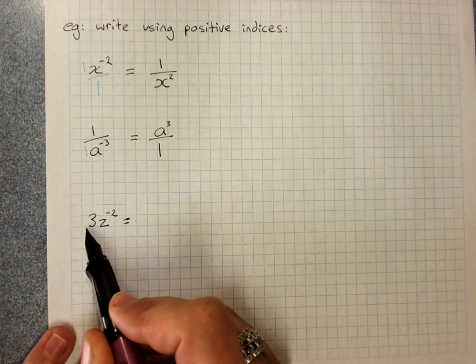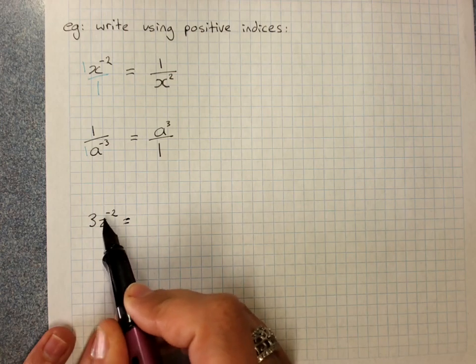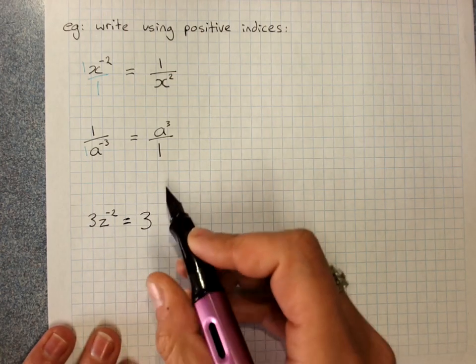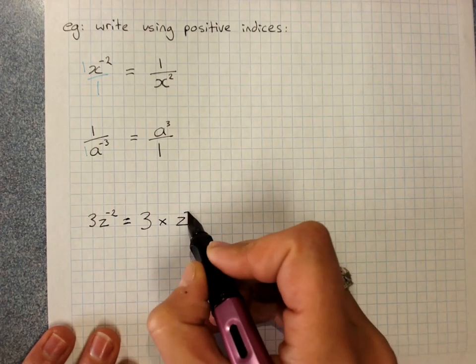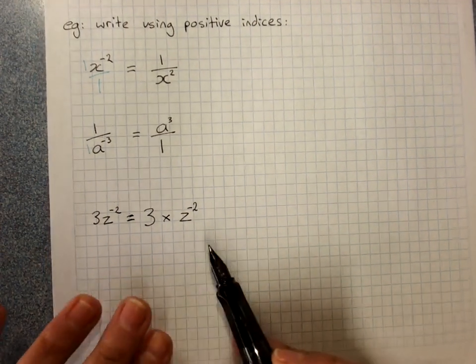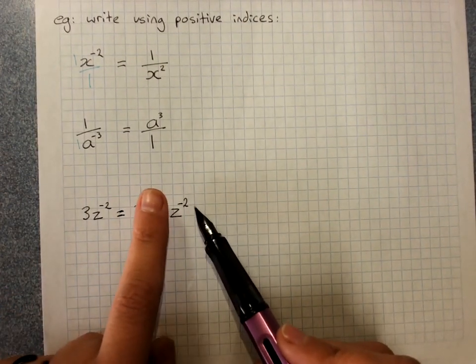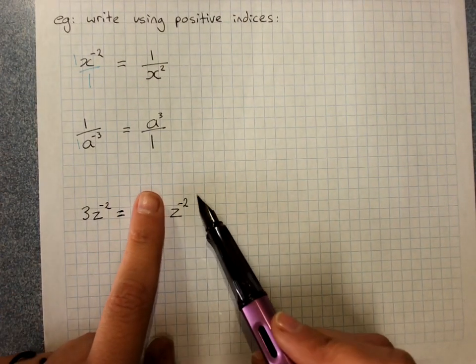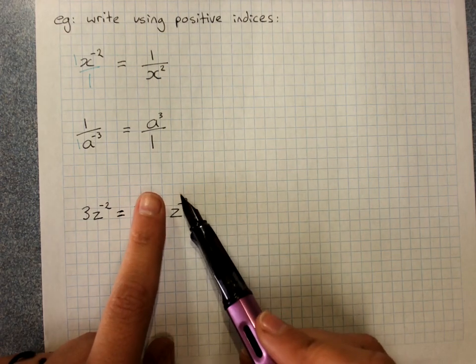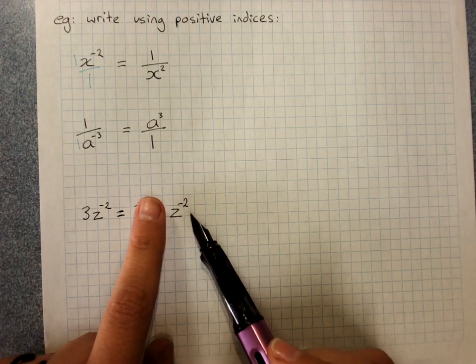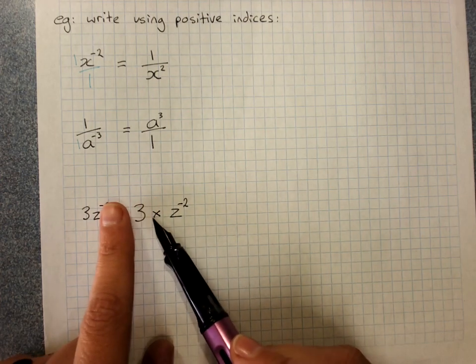This means 3 times z to the negative 2. Write it as that: 3 times z to the negative 2. Because then you can see quite clearly that this is the negative index. This is the thing that can be changed to its positive reciprocal, and then that new fraction gets multiplied by 3.